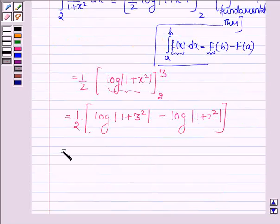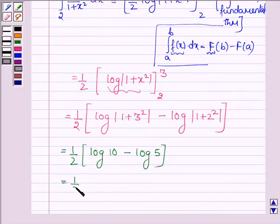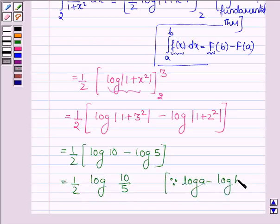Now, this is further equal to (1/2)[log 10 - log 5], which equals (1/2)log(10/5), since log a - log b = log(a/b).